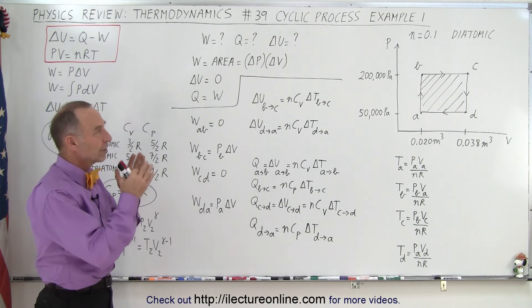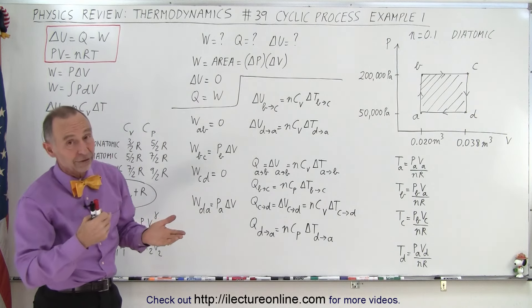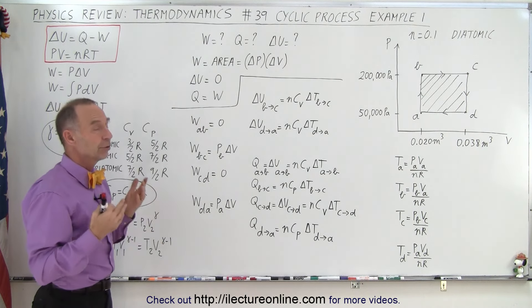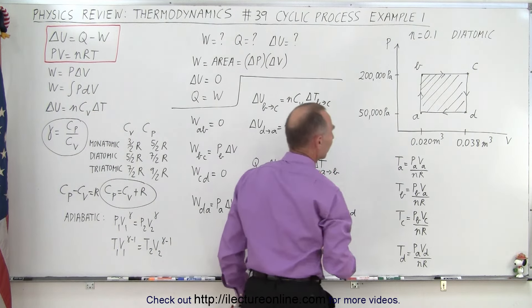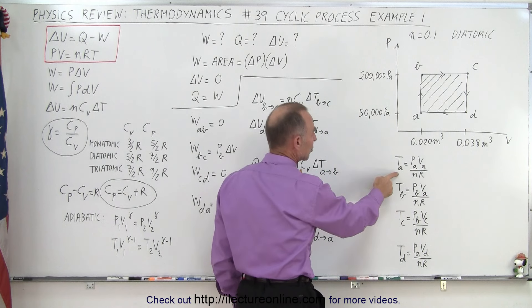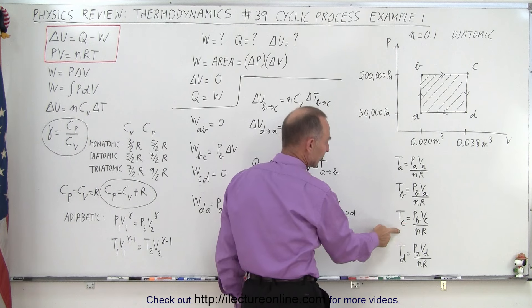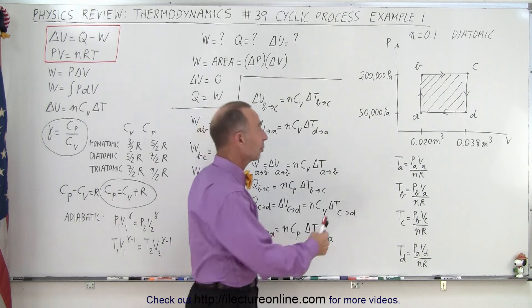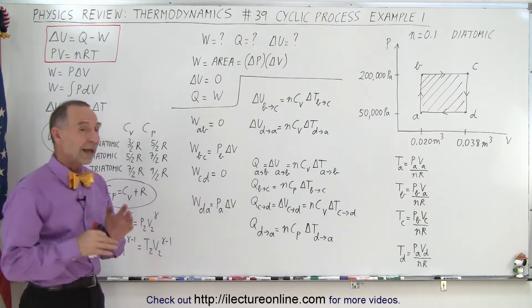What if we want to find the work done, the change in internal energy, and the heat added to the gas in each, or taken away from the gas in each part of the cycle, how do we do that? Well, to do that we must know the temperature at each of the four locations, A, B, C, and D, and of course we use the ideal gas equation to find the temperature at A, the temperature at B, the temperature at C, and the temperature at D. So that allows us to calculate all the temperatures provided we know the pressure at each point, and the volume at each point. Once we have that, we can also look at the work done in each of the four processes.